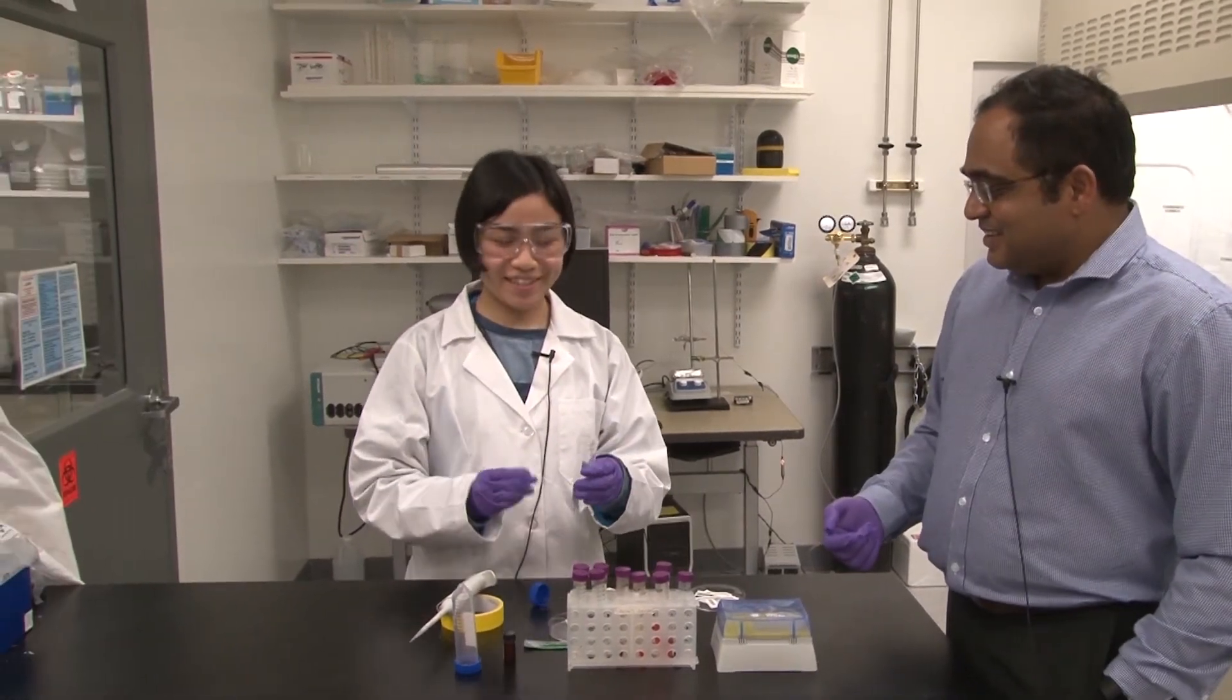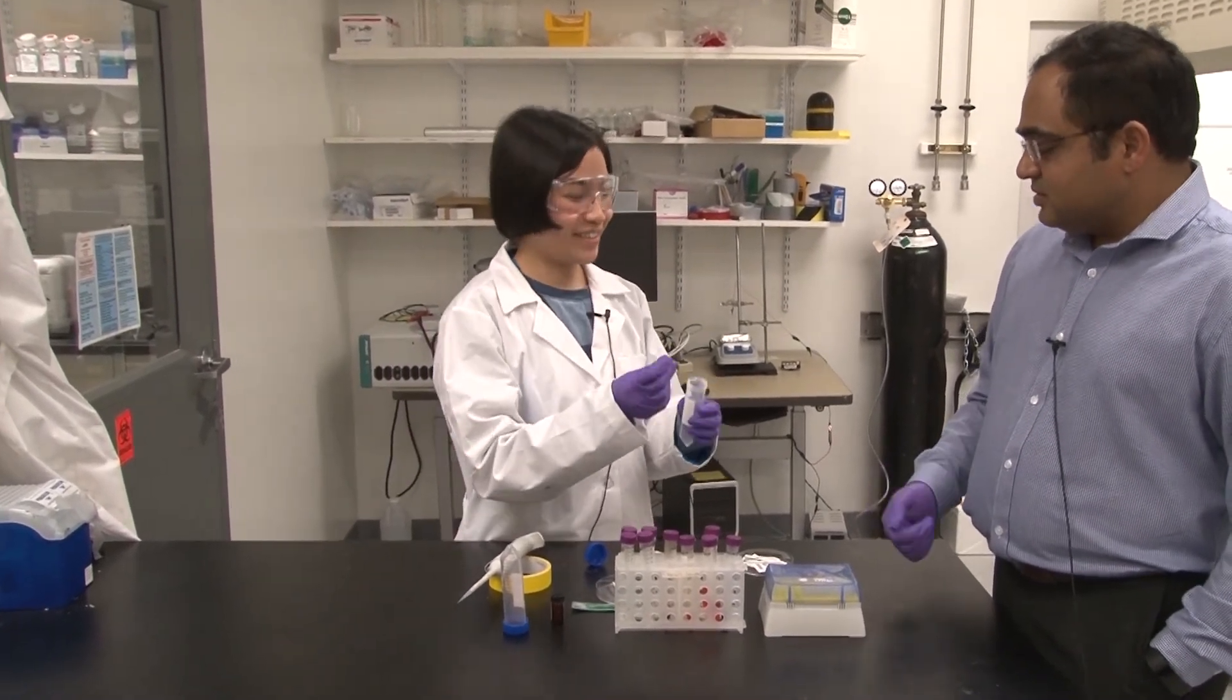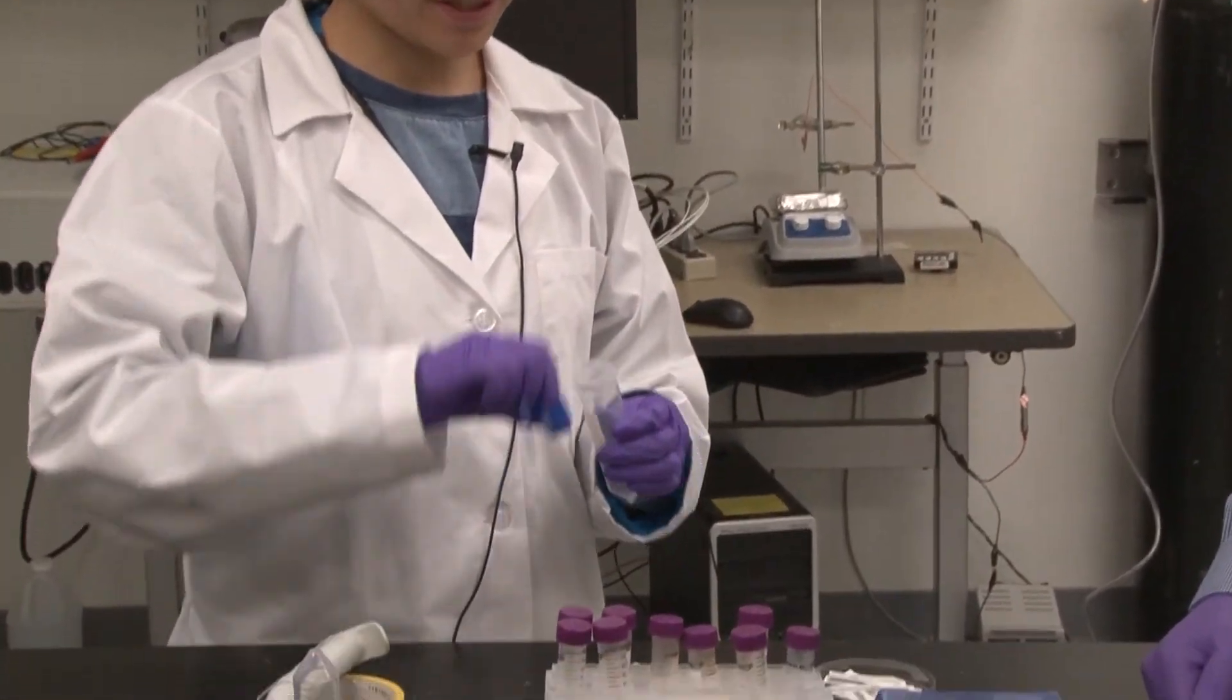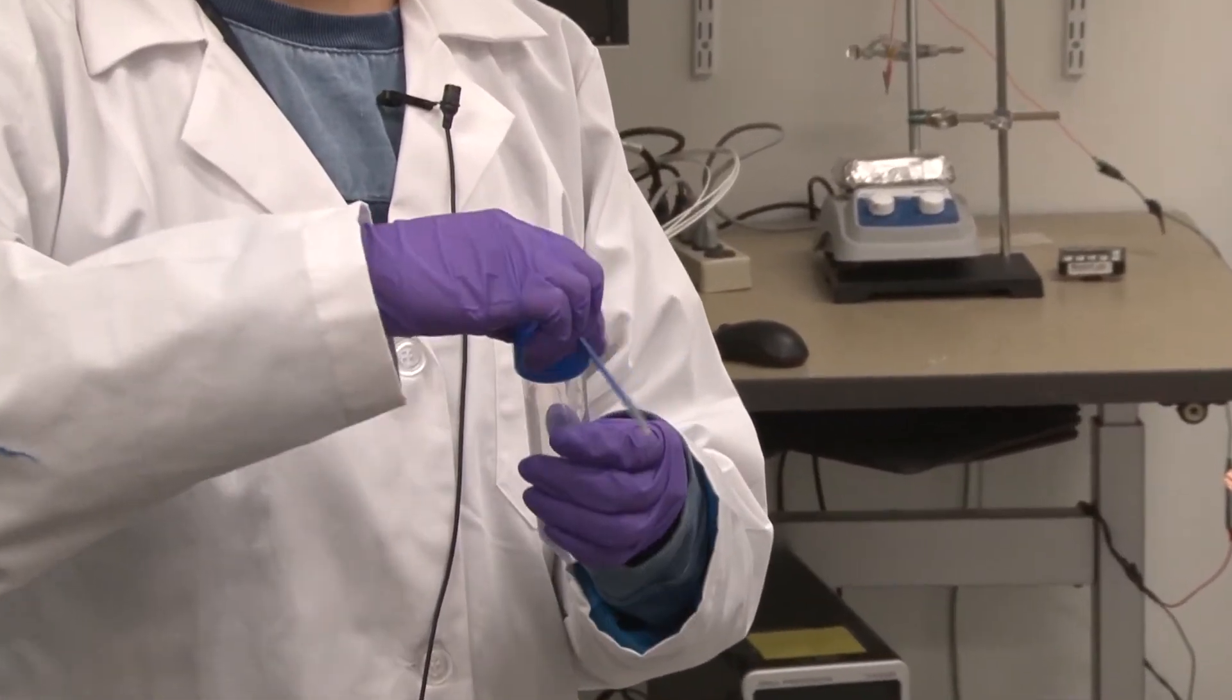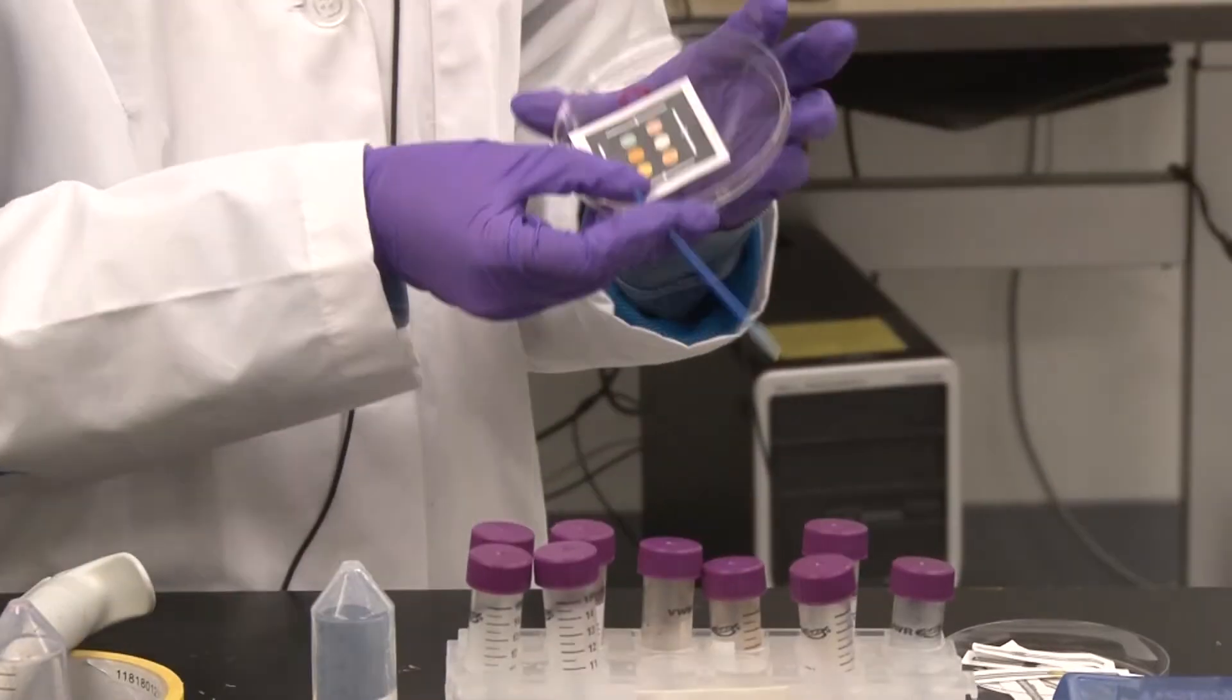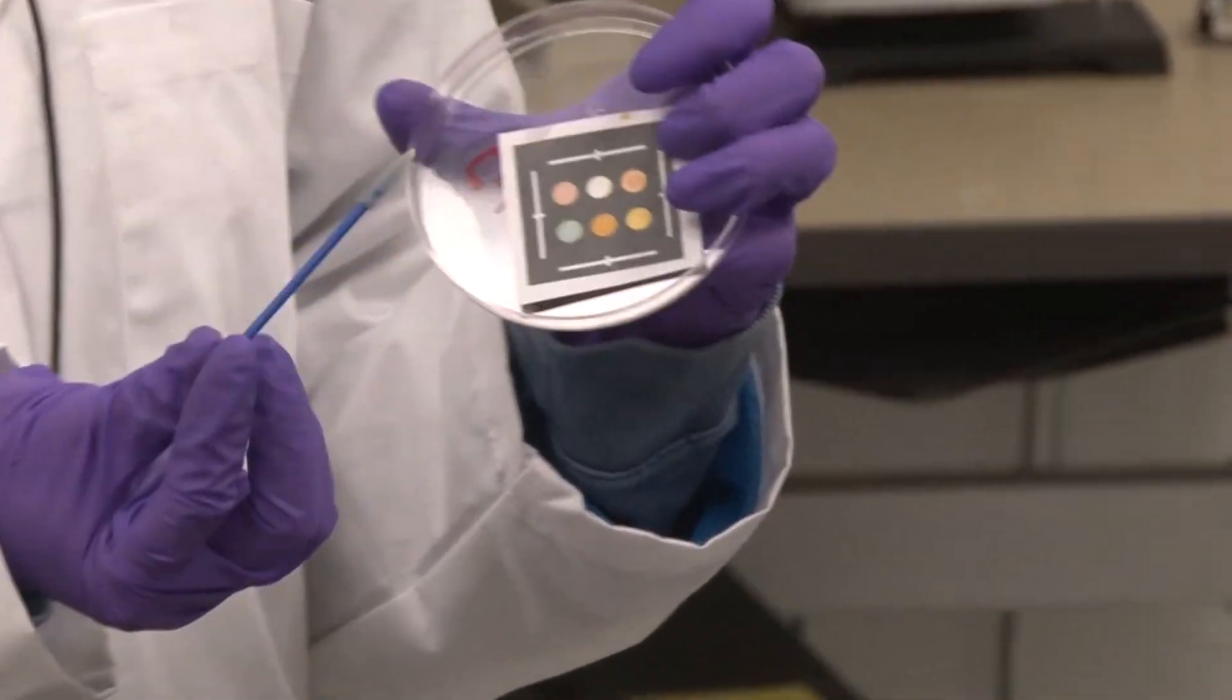Maybe I can give one example. This is ethanol, one of the volatile organic compounds. Let me dip a little bit of ethanol. As we can see, now the color of the optical array is like this.